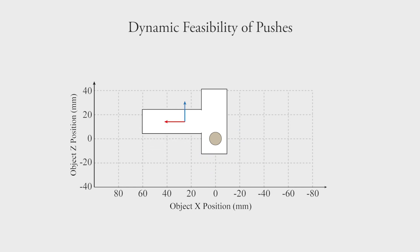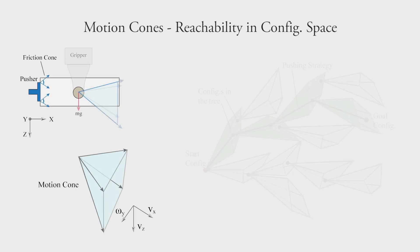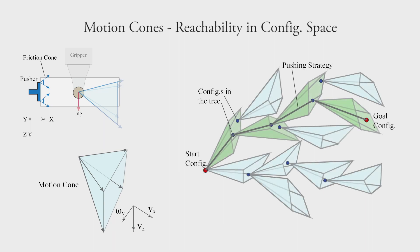One of the key challenges when planning such pushing strategies is to characterize which object motions are feasible considering the under-actuation of friction contact. In this work, we show that it's possible to estimate the set of feasible object motions in the form of a motion cone. Using motion cones as reachability bounds directly in the configuration space, we develop a fast and efficient in-hand manipulation planner.